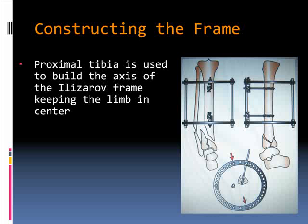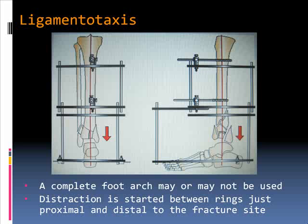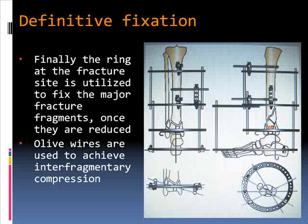This is how we construct the frame. First, two rings are applied in the proximal part of the tibia, creating the basic framework. In the second step, the calcaneum ring is used to bring the talocalcaneal component back to the axis of the tibia. We then go for ligamentotaxis between the tibial segment and the calcaneum segment, leaving the dummy ring in between for the final fixation. Definitive fixation is achieved under image intensifier guidance using this dummy ring, and interfragmentary fixation is completed with the Ilizarov apparatus.